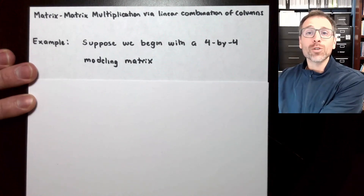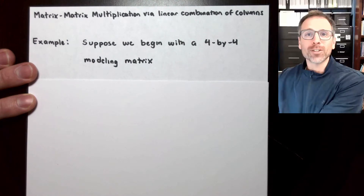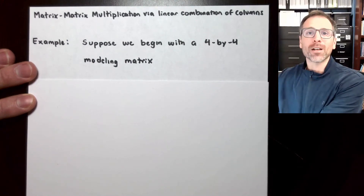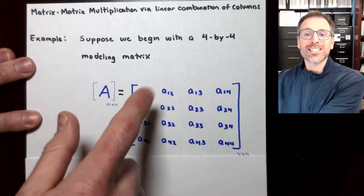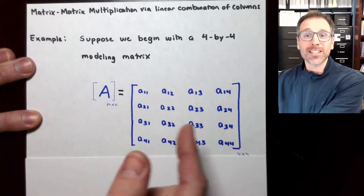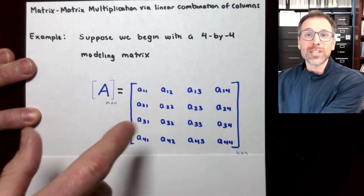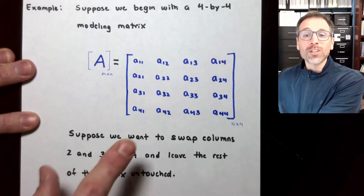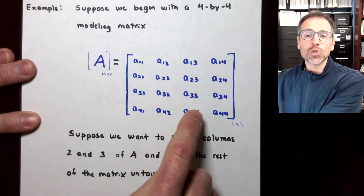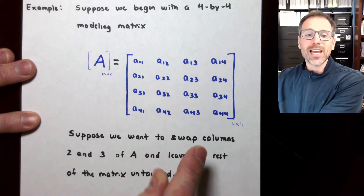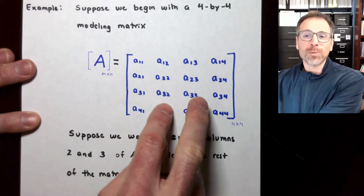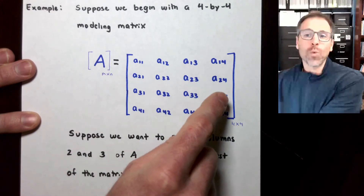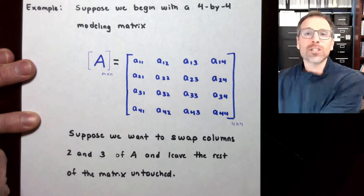Let's take a look at a second example of how to use matrix-matrix multiplication via linear combination of column vectors in order to do work on a modeling matrix. So let's say that we started with a general four by four modeling matrix that came up in a modeling context. We'll use the symbols as a general approach. We want to swap columns two and three of matrix A and leave the rest of the matrix untouched — columns one and four exactly where they were to begin with.